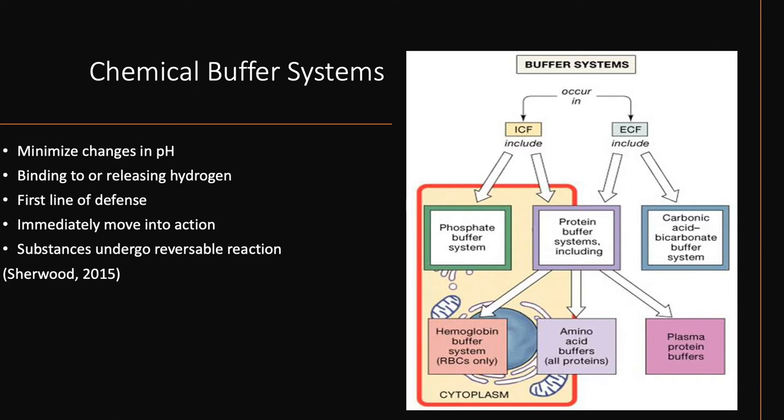There are four buffer systems that we will discuss in more depth. These include the carbonic acid-bicarbonate buffer system, which we have mentioned, the protein buffer system, the hemoglobin buffer system, and the phosphate buffer system.